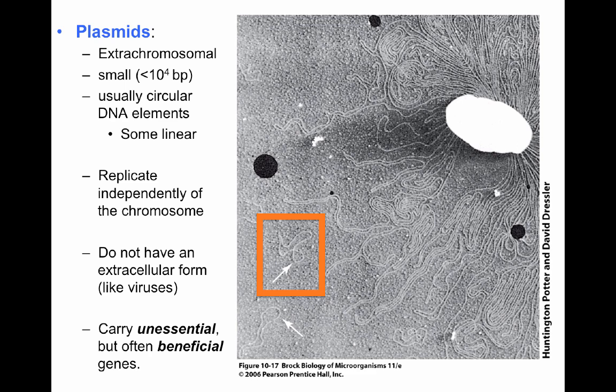Now let's look at plasmids — extra-chromosomal units. Here is the bacterial chromosome of E. coli all unwound with multiple supercoils, and the small images shown with white arrows are the plasmids. They are usually less than 10,000 base pairs, circular in most microorganisms though some are linear. They have their own independent origin of replication and are independently replicated from the chromosome. Some have high copy number, replicating fast so the cell has many copies; others have low copy number with slower replication.